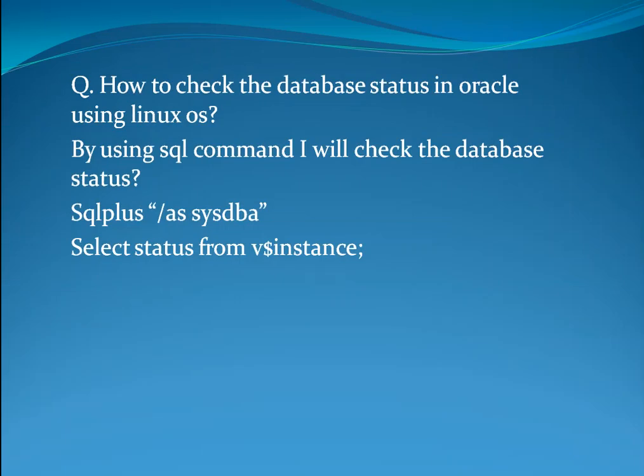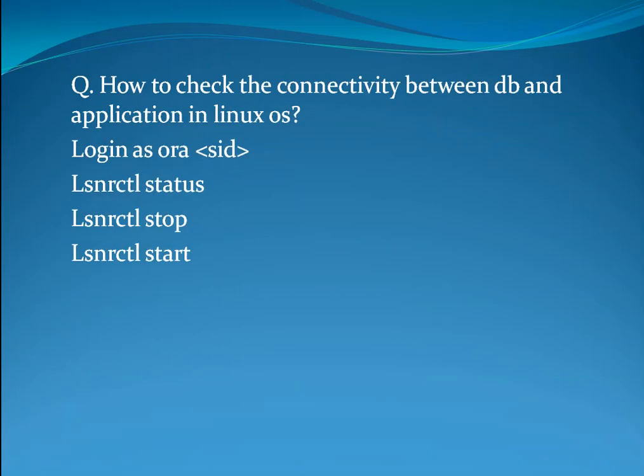How to check the database status and connectivity between DB and application in Linux? For database status, use the SQL command as in Windows. For connectivity, first log in as ora_SID, then execute the command lsnrctl status. You can stop and start the listener using lsnrctl stop and lsnrctl start.